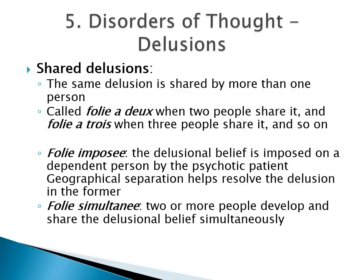Shared delusions, as the name indicates, refers to delusions shared by more than one person. Depending on the number of people who share it, it is called folie à deux when two people share it, folie à trois when three people share it, and so on. In folie imposée, the delusional belief is imposed on a dependent person by the psychotic patient — the psychotic patient would need treatment with antipsychotics, whereas the other person might recover just from being separated from the patient. In folie simultanée, two or more people develop and share the delusional belief simultaneously, which is extremely rare.